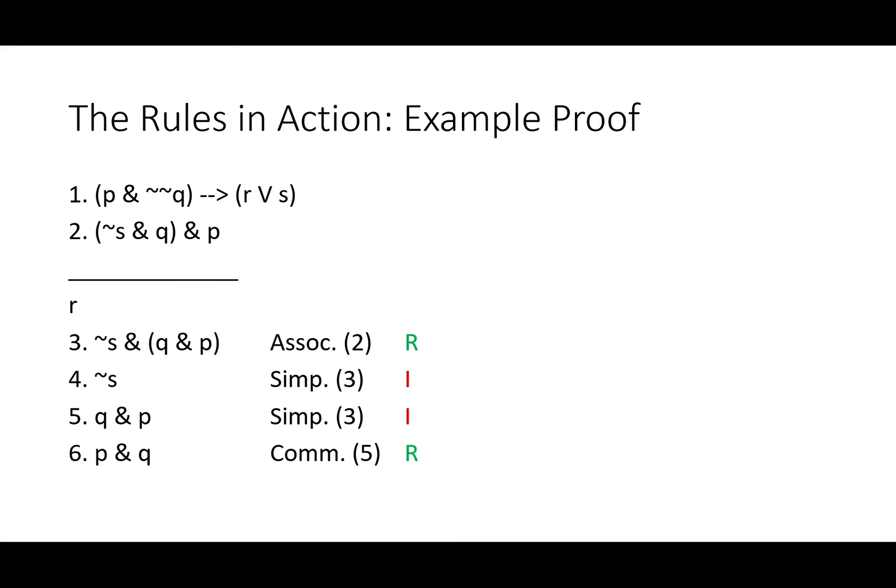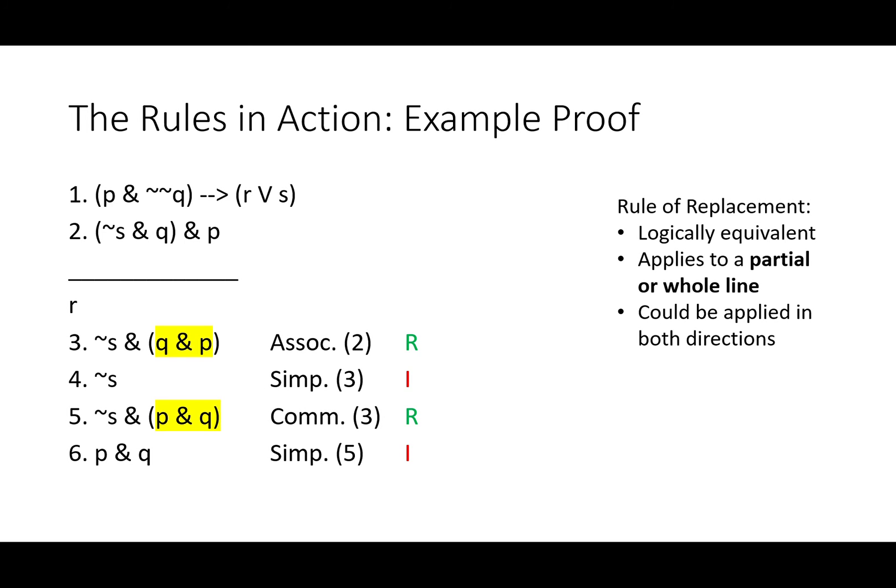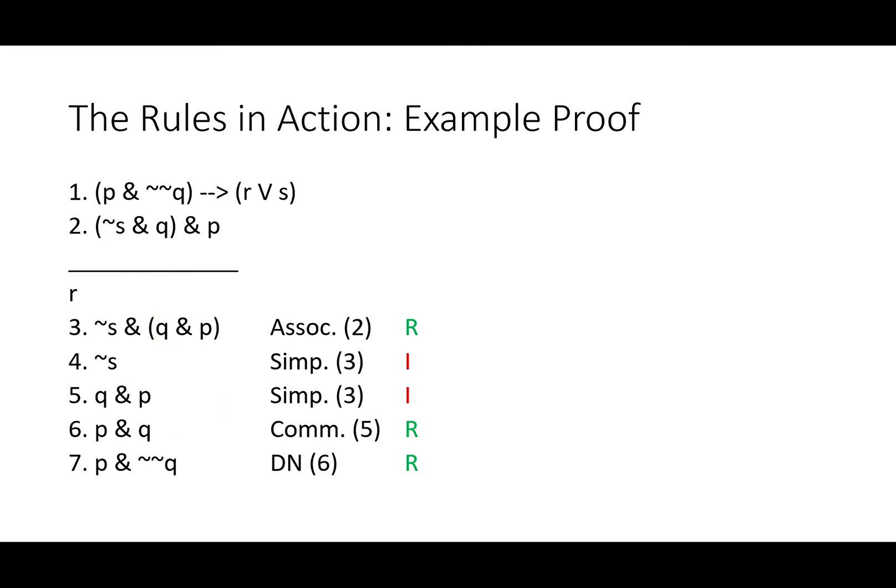But we're not going to. Instead, we're going to do commutativity. Here's another rule of replacement. We've applied it to line five and just swapped P and Q places. If we wanted to, we could have applied it to line three, where it says Q and P and gotten ourselves not S and P and Q by commutativity. And then we could simplify this. As a rule of replacement, this applies to either partial or whole lines. We could do this either way if we wanted to. We'll go back to the first way we did it, because I think it's most intuitive, but that doesn't mean there aren't other ways that are just as good.